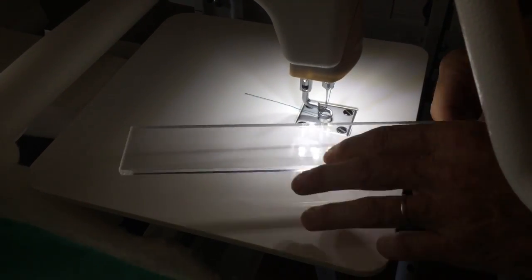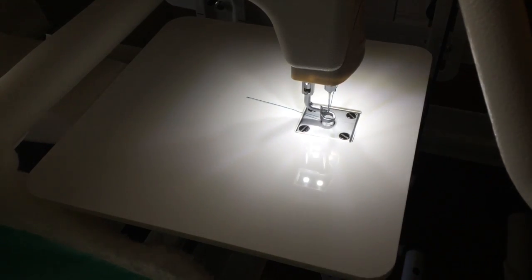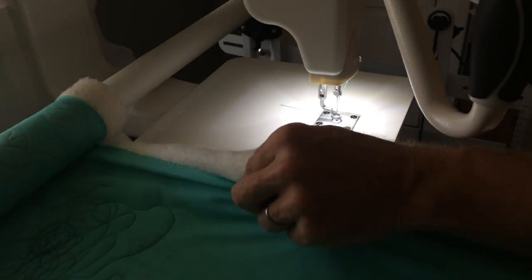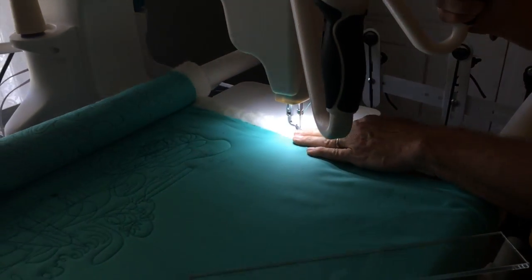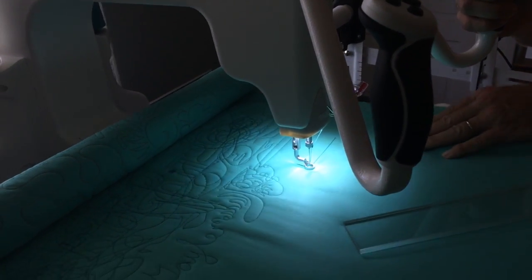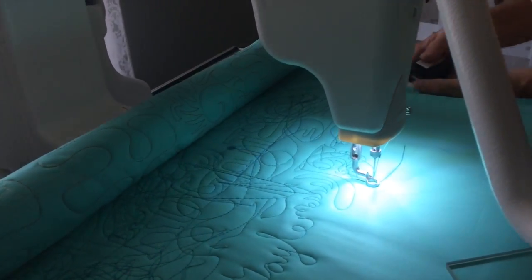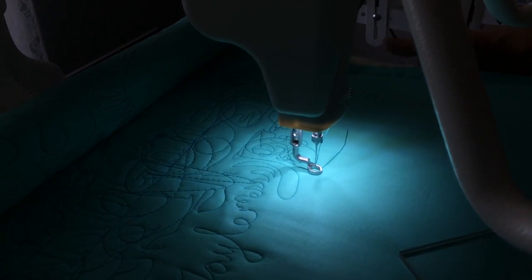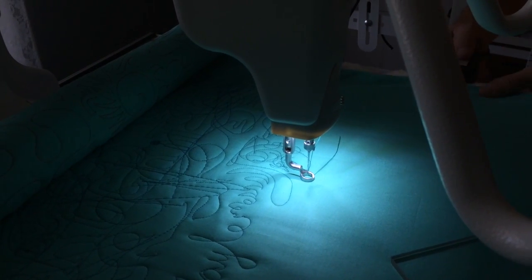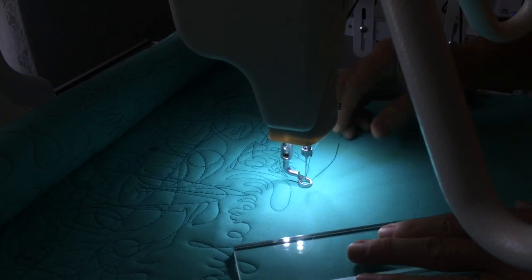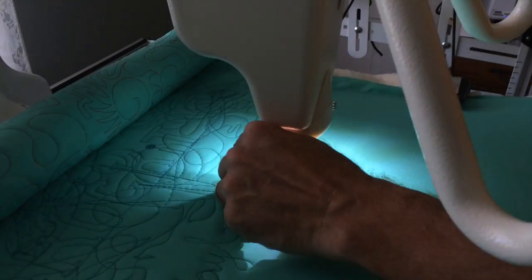Hopping feet usually have a lip on them and so this ruler is made to fit perfectly up against the edge of your hopping foot. The ruler base obviously goes under the quilt and so you don't see it, but when you use your ruler on there then you will be able to feel it.